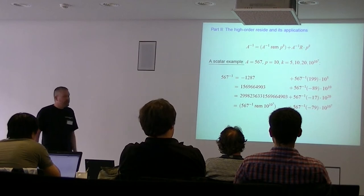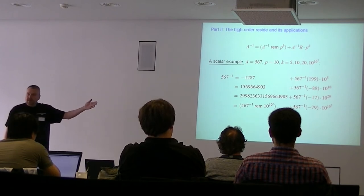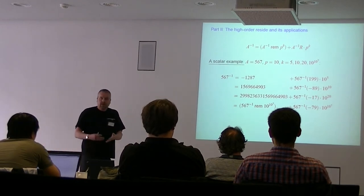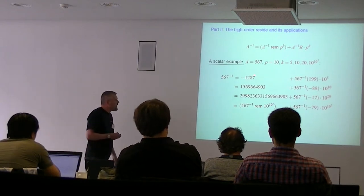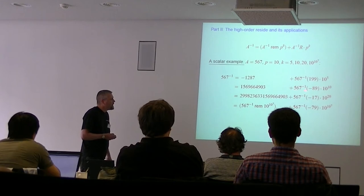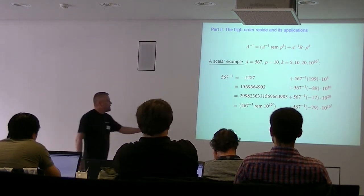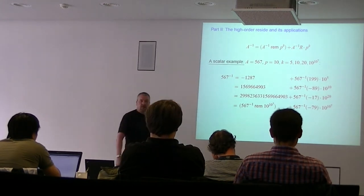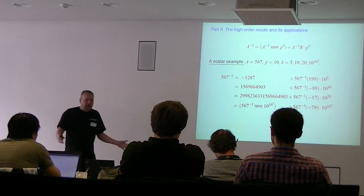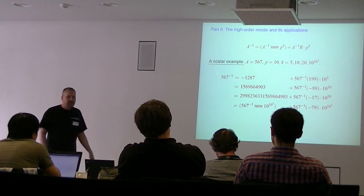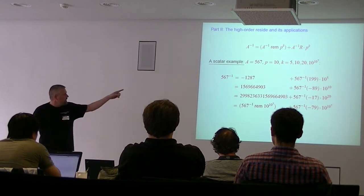The inverse of 567 modulo 10⁵ gives, say, -187 in the symmetric range. I've expressed the inverse with an integer part plus a fractional part given by 567 inverse times the residue at that working precision of 10⁵. I can do this for any precision: at 10¹⁰, I get the inverse modulo 10¹⁰, and there's a unique residue — in this case -89. What I want to show is that the residue is always small. Even at the extreme precision of 10^(10^7), the object is too large to print, but the residue is still small and always proportional to the size of A itself.